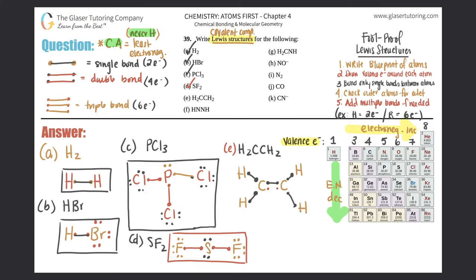Now check the inner carbons. This carbon has two, four, six, seven electrons - it needs eight. The other carbon also has two, four, six, seven. So we need to add multiple bonds - these two remaining electrons will form a double bond between the carbons. Now each carbon has two, four, six, eight electrons - the octet is satisfied. Box that answer off.